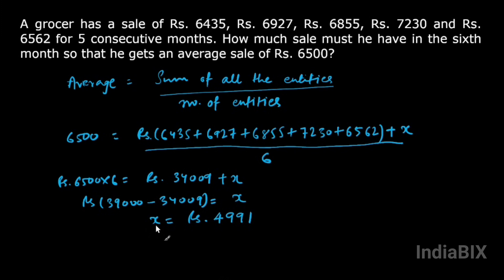So this is the sale that he should make in the sixth month in order to have an average sale of rupees 6500 for a period of six months. This is our required answer.